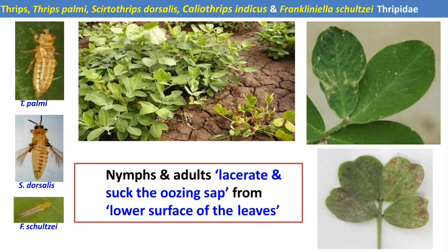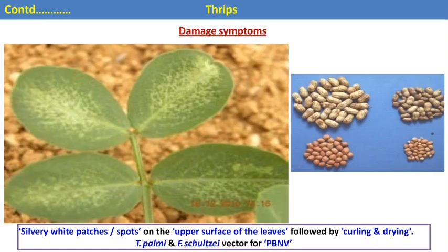Both nymphs and adults damage the groundnut crop. Thrips are sucking pests but differ from others because the right mandible is absent. Hence during cell sap sucking, both nymphs and adults scrape the epidermal layers of the leaves and suck the oozing cell sap. In case of severe infestation, the infested leaves show silvery-white patches or spots followed by curling and drying of leaves.